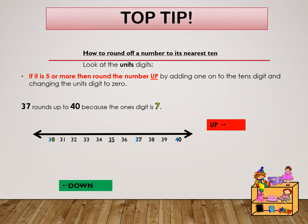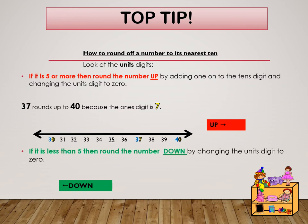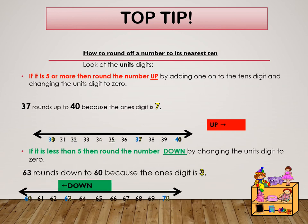The next rule: if the unit's digit is less than 5, then round the number down by changing the unit's digit to 0. For example, 63 rounds down to 60 because the unit's digit is 3.